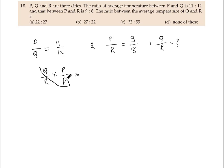Now if we pair these two, we can write this as P by R into Q by P. P by R ka value is 9 by 8 into...